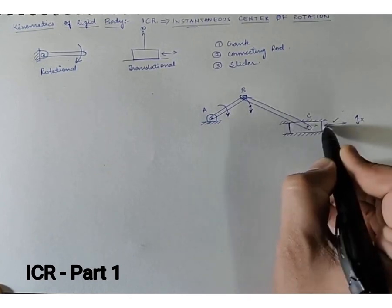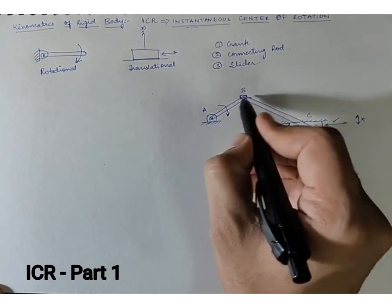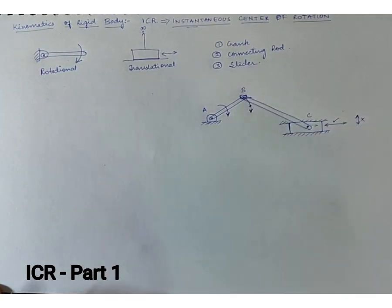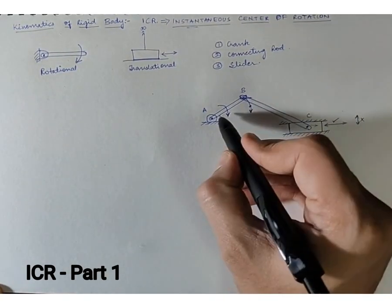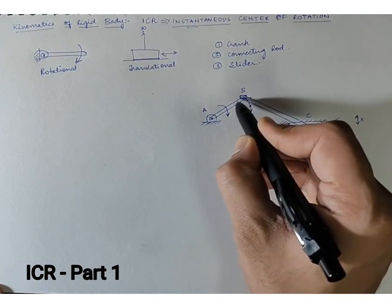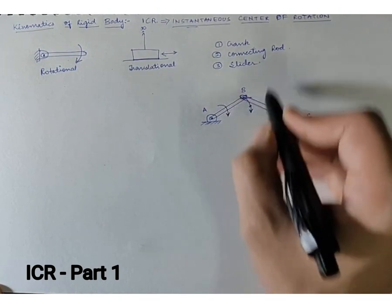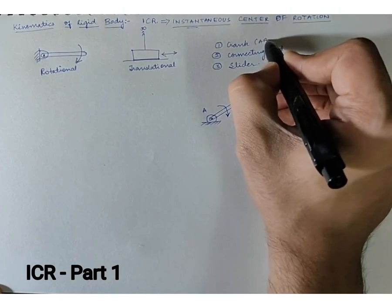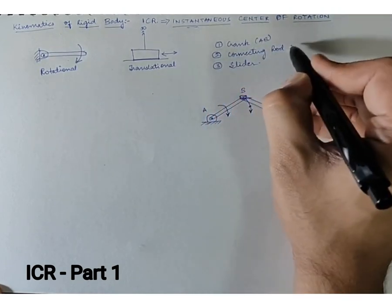Now if you observe the link AB, AB as I told you was the crank. Let me just specify it here: AB is crank, connecting rod is BC, and my slider is C.